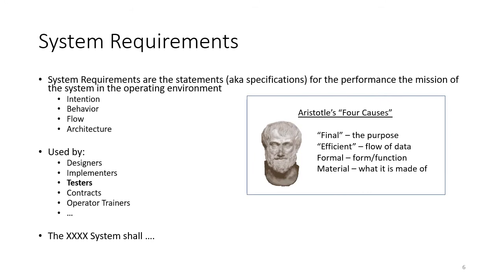System Requirements are the currency of system engineers — this is what we use to manage the development of a very complex system. System Requirements are statements or specifications for the performance of the system in the mission and operating environment. System Requirements generally come in four flavors: a description of the intention, the description of the behavior of the system, the description of the flow of information through the system, and a description of the underlying architecture components and functions.